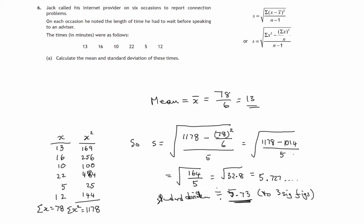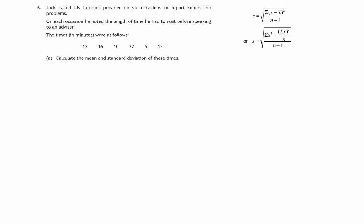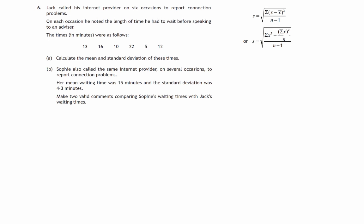Okay, so let's now look at the second part of the question. That says Sophie also calls the same internet provider on several occasions, and her mean waiting time was 15 and standard deviation was 4.3. So we've got to make a valid statement about her experiences and Jack's experiences. So first, Sophie's mean, that's x bar, was 15, and the standard deviation s in her case was 4.3. Now recall that what we calculated in Jack's case was that the mean was 13 and the standard deviation was 5.73.